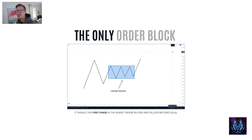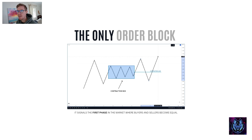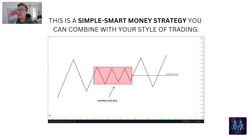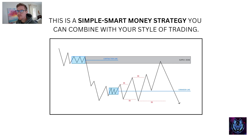If price breaks above the box and stays above it, it creates a contraction line that projects out the center of the box. If price breaks above and then below the box, it creates an expansion line that projects outside of the box. This is a simple smart money strategy you can combine with your style of trading. Once you know how to use contraction lines, expansion lines, and liquidity lines in this way, you can combine it with your style — including with supply and demand zones.